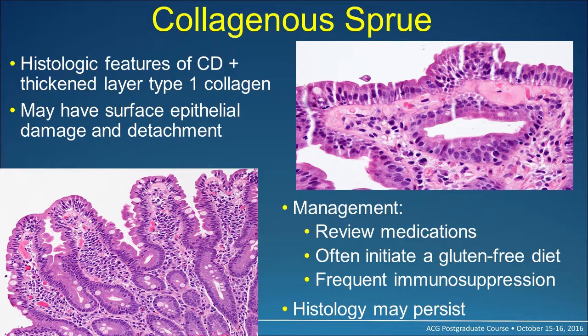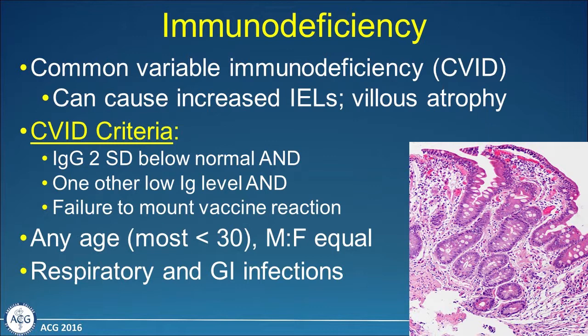Collagenous sprue involves histologic features of celiac disease plus a thickened layer of type 1 collagen, which can cause detachment and damage to the surface epithelium. When we see collagenous sprue, a very careful medication review is warranted. Because we don't initially know if medication is the cause, we may at least initially put patients on a gluten-free diet to improve them symptomatically, given how ill these patients can be. Patients with collagenous sprue not related to a medication may frequently need immunosuppression, and some histologic findings may persist even with medical management.